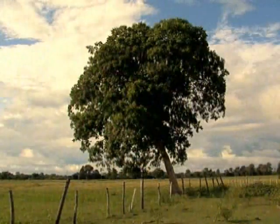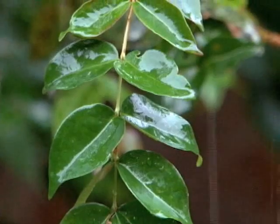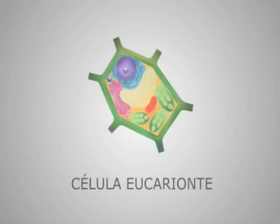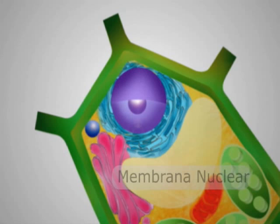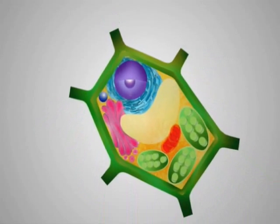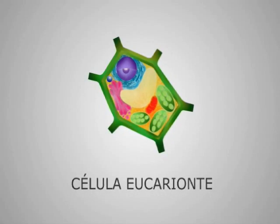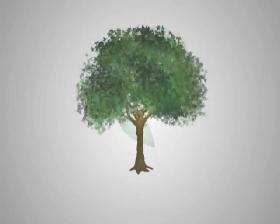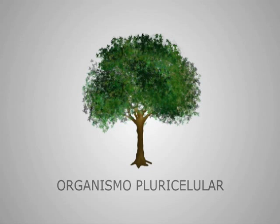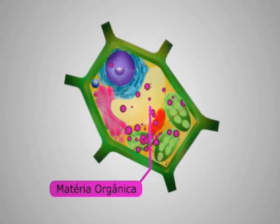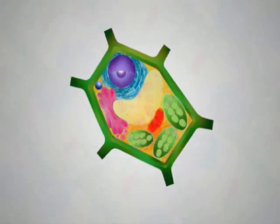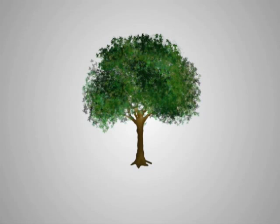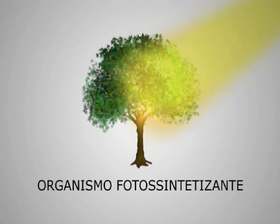As plantas pertencem ao reino Plantae. Elas são organismos eucariontes pluricelulares autótrofos fotossintetizantes. Organismos eucariontes são aqueles que possuem núcleo organizado, ou seja, envolto por uma membrana. Os pluricelulares possuem muitas células, diferente dos unicelulares que possuem apenas uma. Os seres autótrofos são capazes de sintetizar a matéria orgânica que precisam para sobreviver, seu alimento.